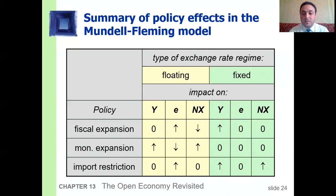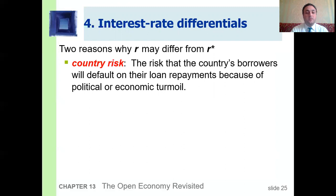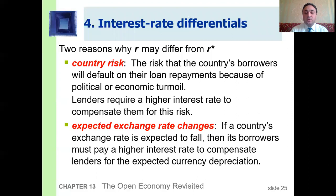The fourth topic: interest rate differentials. Two reasons why a country's interest rate may differ from the world interest rate. First, country risk — the risk that a country's borrowers will default on loan repayments due to political or economic turmoil. Lenders require a higher interest rate to compensate for this risk. Second, expected exchange rate changes — if a country's exchange rate is expected to fall, its borrowers must pay a higher interest rate to compensate lenders for the expected currency depreciation.